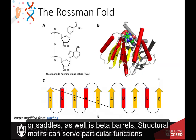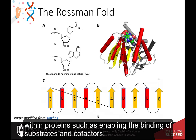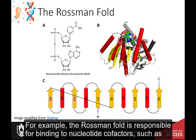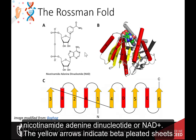Structural motifs can serve particular functions within proteins, such as enabling the binding of substrates and cofactors. For example, the Rossmann fold is responsible for binding to nucleotide cofactors, such as nicotinamide adenine dinucleotide, or NAD.